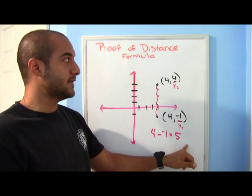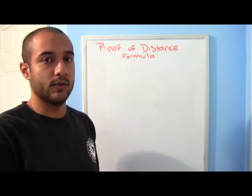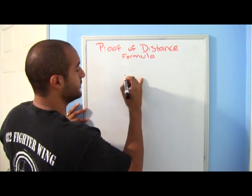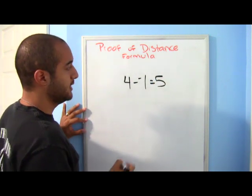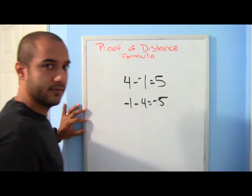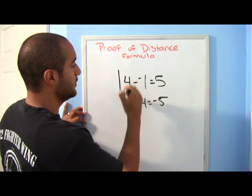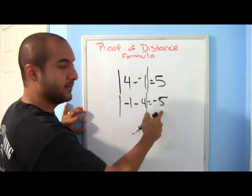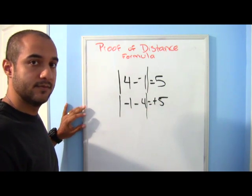Let's see how that relates to our distance formula. Remember, you get to choose which one is x1, y1 and which one is x2, y2. You could run into a problem like this: if you have four minus negative one, you get five. But if you had chosen it the other way — negative one minus four — you get negative five. Notice that in distance there's no such thing as a negative distance, so you use the absolute value of whatever's here, and you still get five.